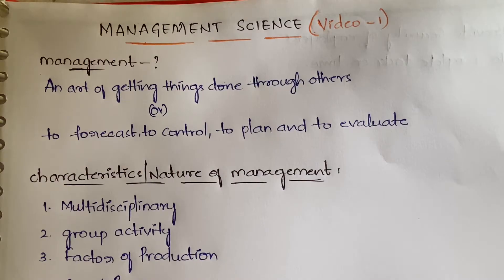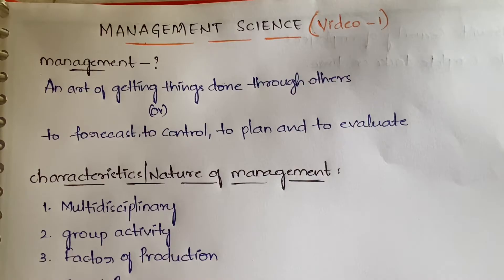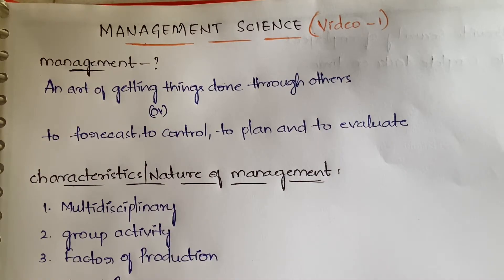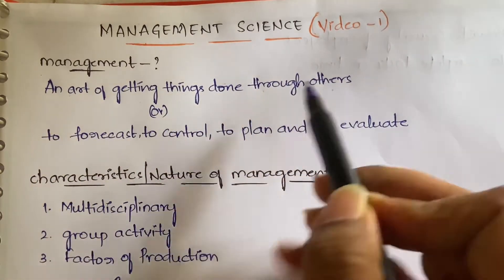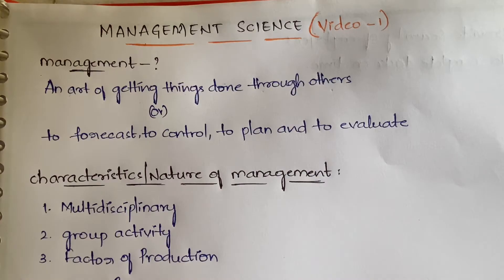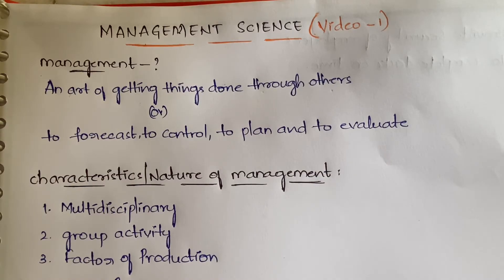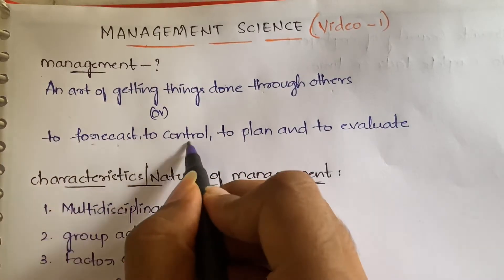Let's understand what is the definition of the word management. We all know what management is, but if asked to write the definition on paper, we can't quite articulate it. The standard definition given by economists is: management is an art of getting things done through others — making others do the work. Not everybody can coordinate among people and make them work.